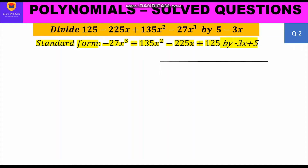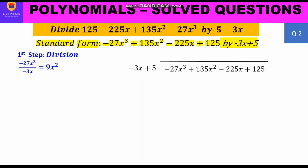We set up the problem with the divisor −3x + 5 outside and the dividend −27x³ + 135x² − 225x + 125 inside. The powers are in decreasing order: 3, 2, 1, 0. We start with the first step, division: −27x³ divided by −3x gives 9x² as the quotient, which we write on top.